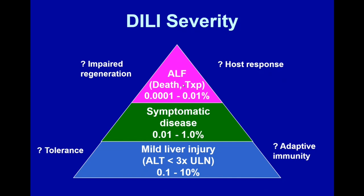Once you get to acute liver failure, the stakes are high — you may end up needing a liver transplant or dying from this idiosyncratic reaction. Because this is a spectrum, and few patients who get mild liver injury actually go on to acute liver failure, there may be different mechanisms at play that increase susceptibility. Is there impaired regenerative or adaptive responses in patients who develop progressive hepatitis and liver failure? Or is there an overly exuberant or aberrant host immune response that leads to this rare clinical phenotype?